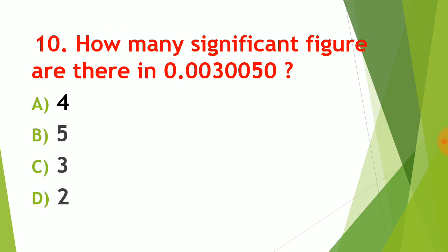Question number ten: how many significant figures are there in 0.0030050? The correct answer is 5. The number starts from 3 — the leading zeros 0.00 are not significant. From 3 onward, including the zeros between and after significant digits, those are significant. The last 0 is also significant. So counting carefully: the leading zeros are excluded, and from 3 we have 5 terms total. The correct answer for question number ten is 5.